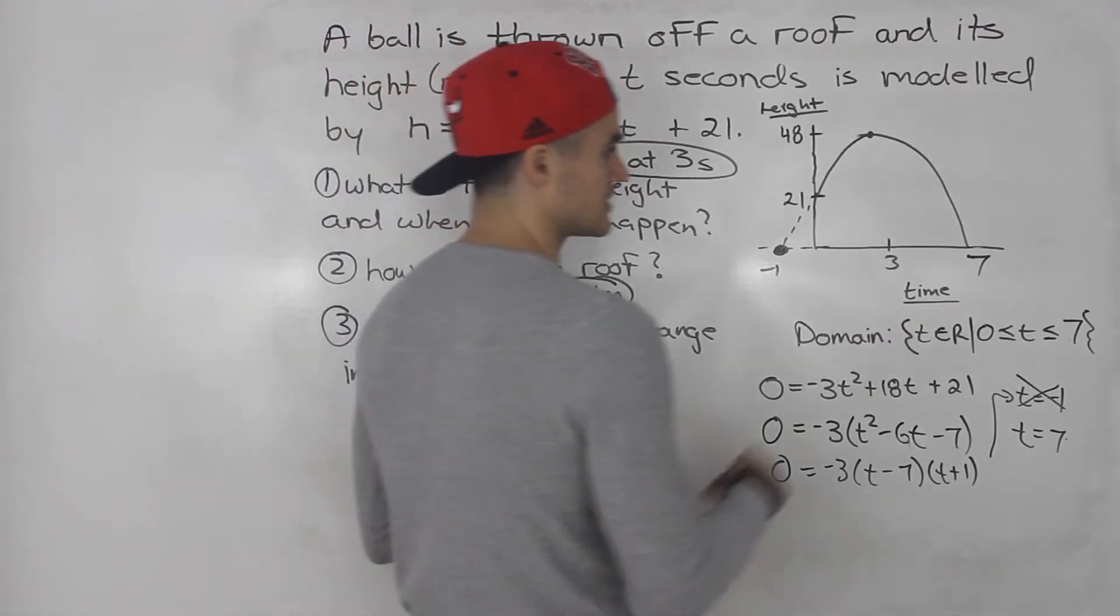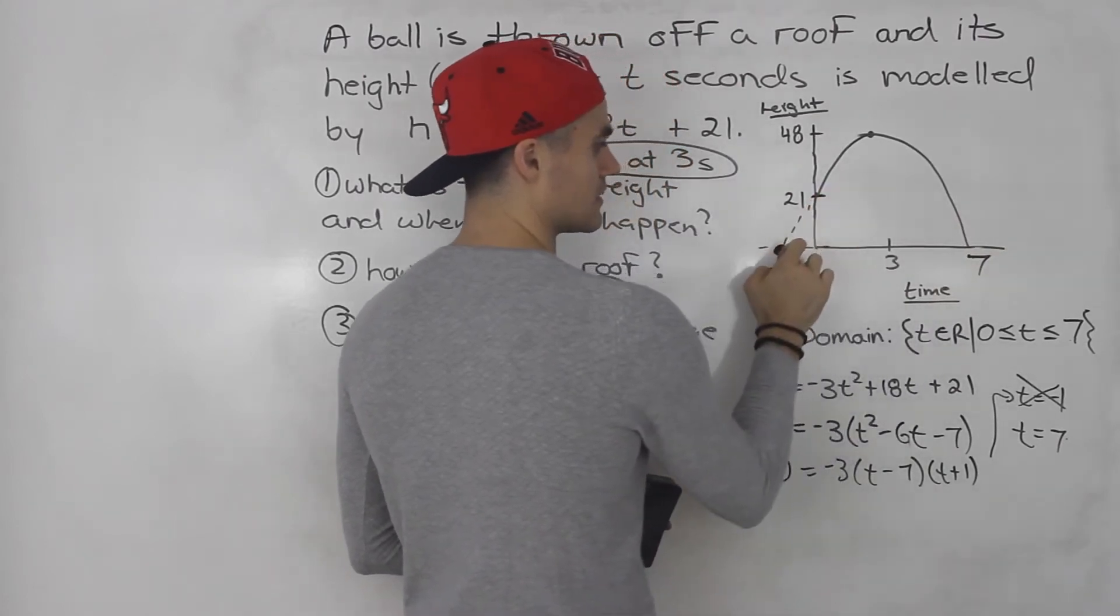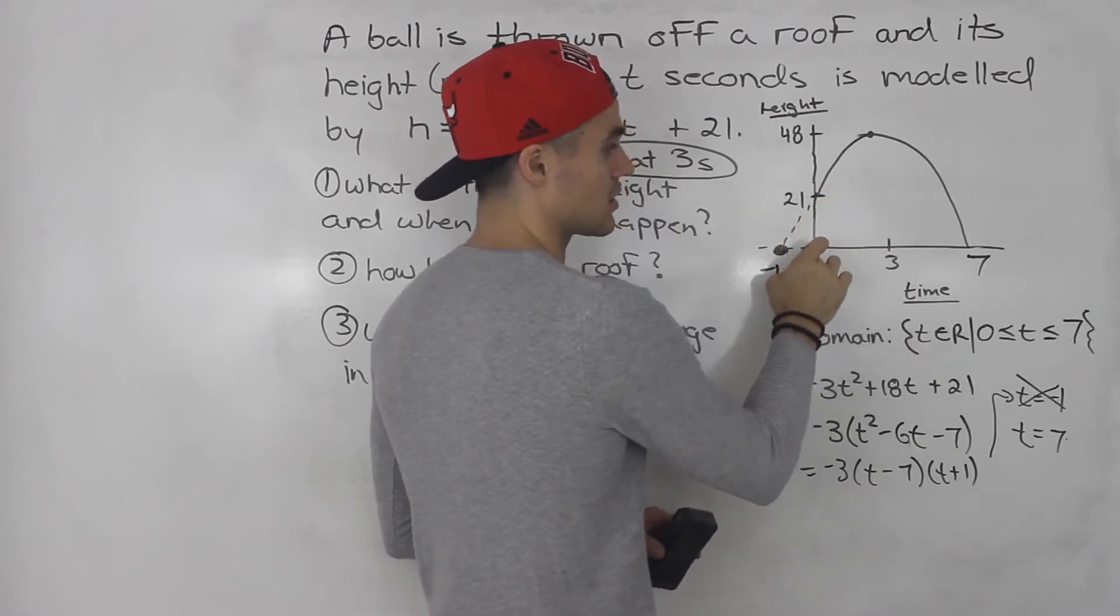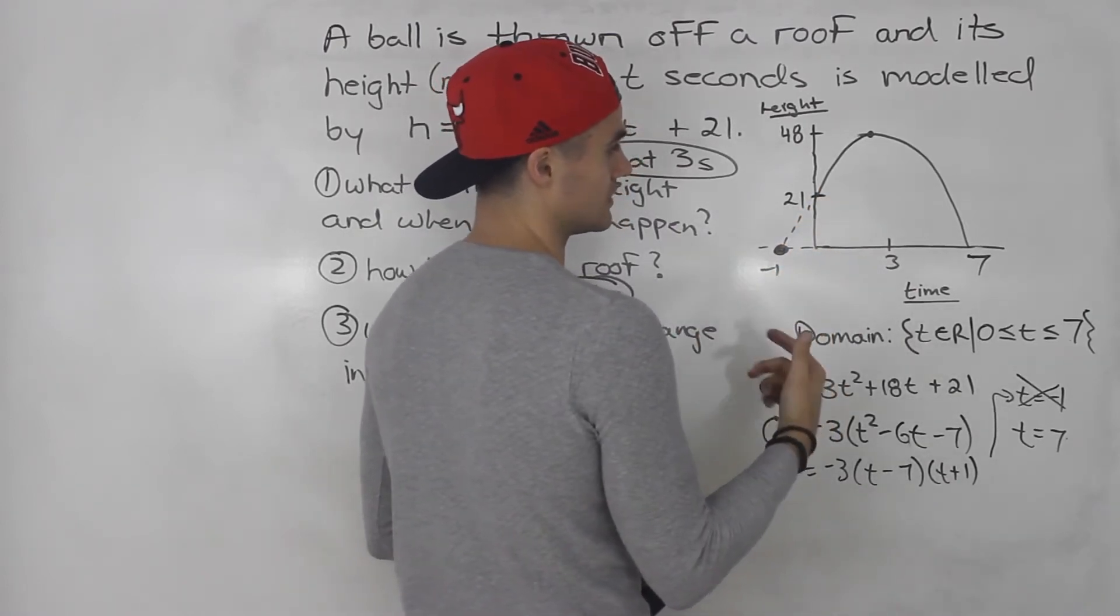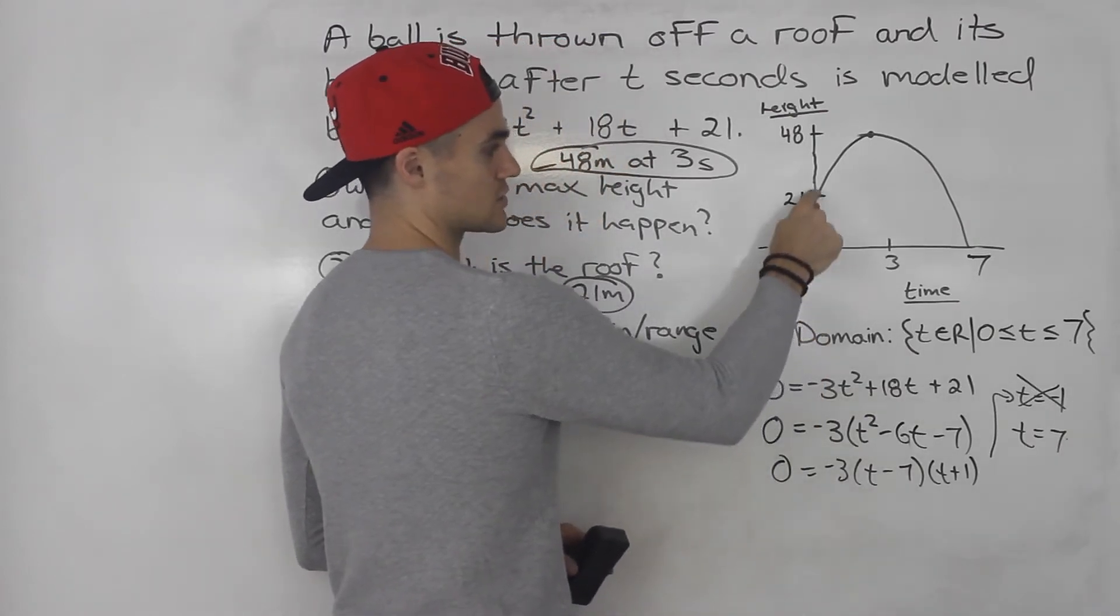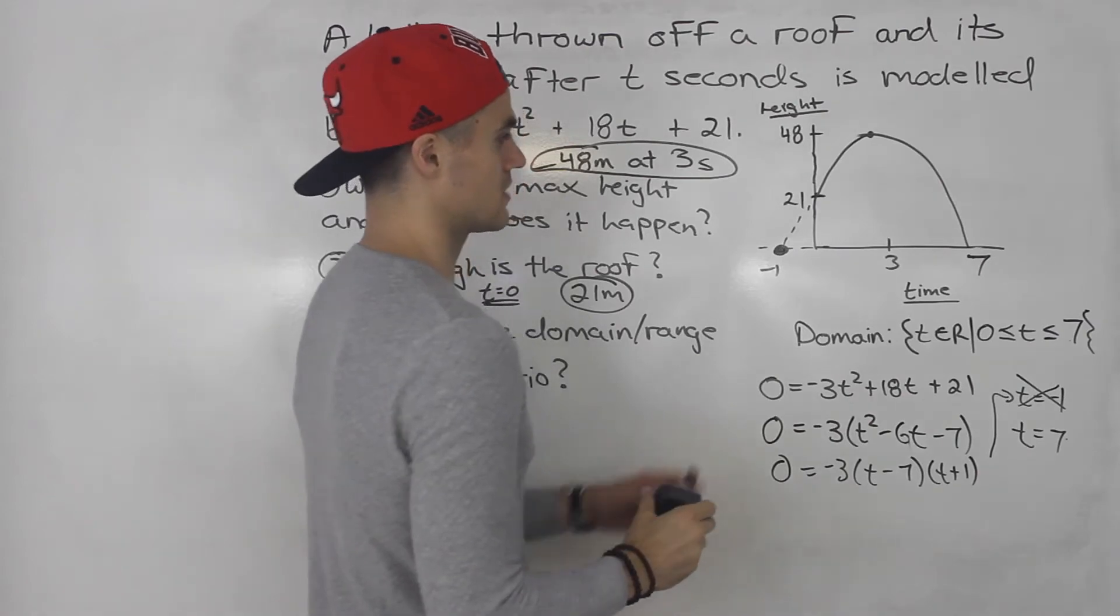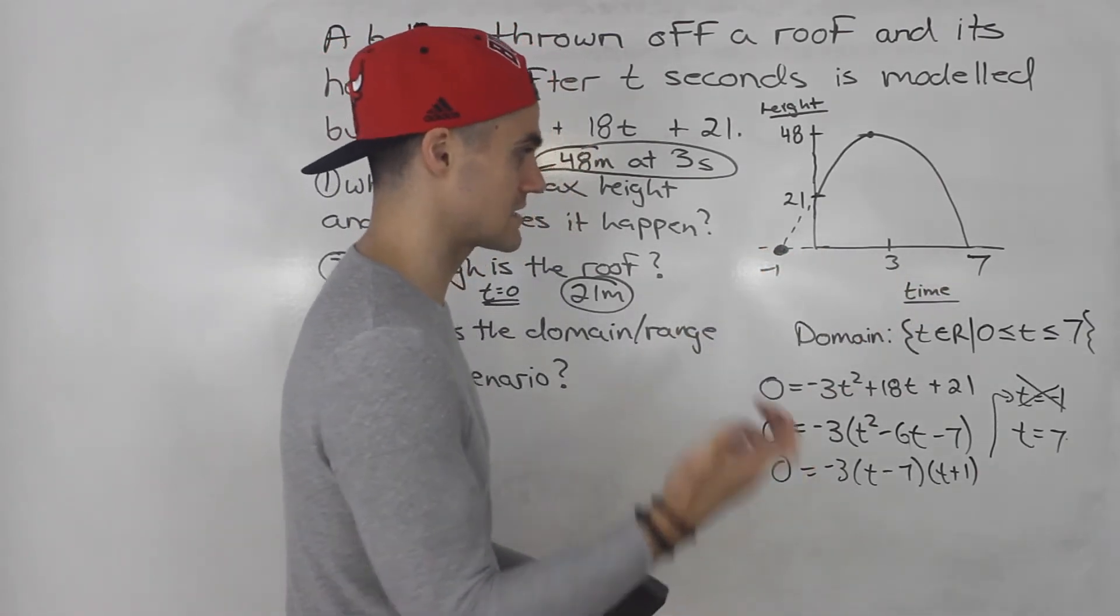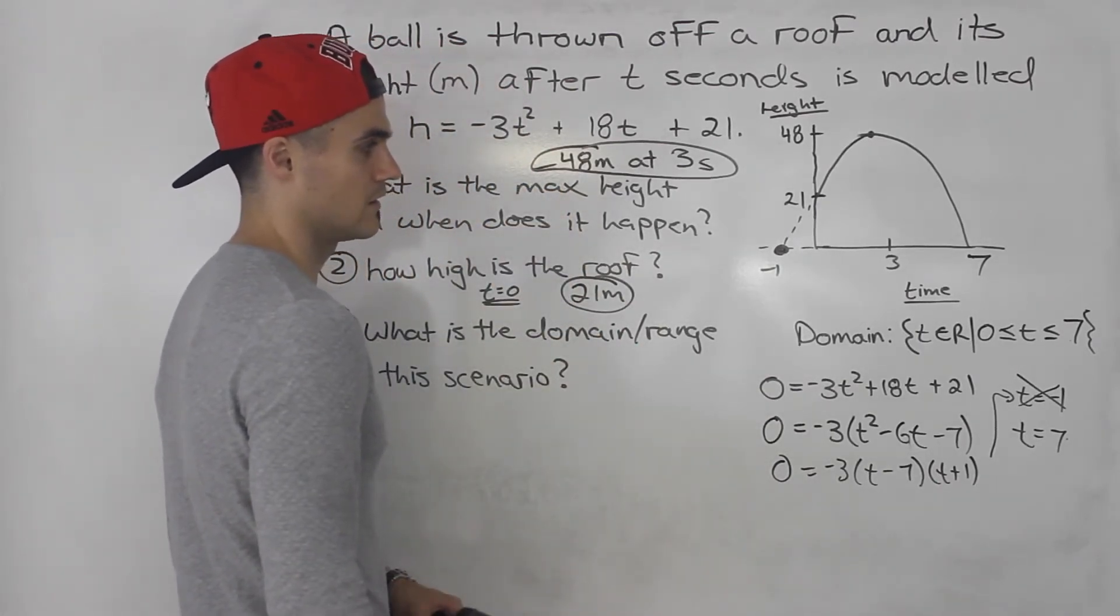You got to be careful not to take the halfway mark between 0 and 7 because at 0, it's not an x-intercept. It's a y-intercept. Unless it's starting at the origin, then it is an x-intercept and a y-intercept. But in this case, there's no x-intercept at that t-value of 0. It's at negative 1. So the midpoint between negative 1 and 7 is 3. So it makes sense that we got 3 before when we completed the square, right?